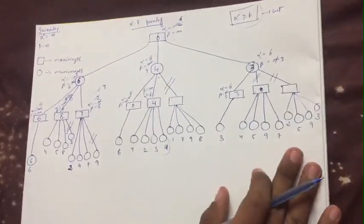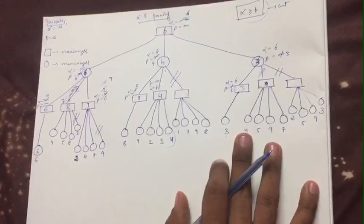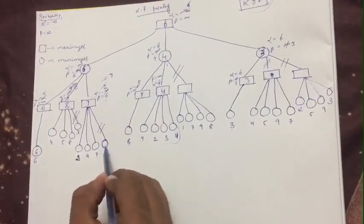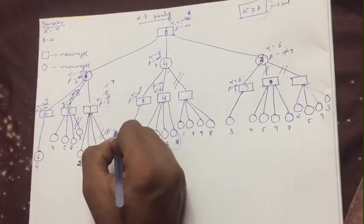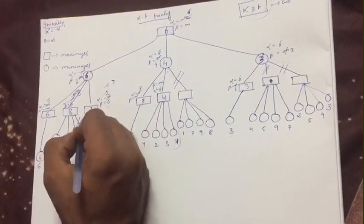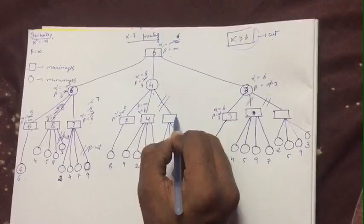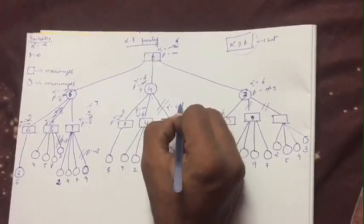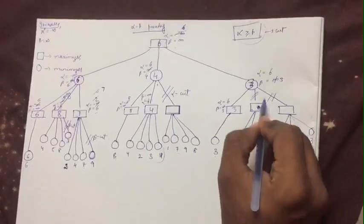A common confusion is which cuts are alpha cuts and which are beta cuts. A minimizer node is represented by a circle, which corresponds to beta. Therefore, a cut above a circle (minimizer node) is called a beta cut. A maximizer node is a square, corresponding to alpha. A cut above a square (maximizer node) is called an alpha cut. The two cuts above maximizer nodes here are both alpha cuts.